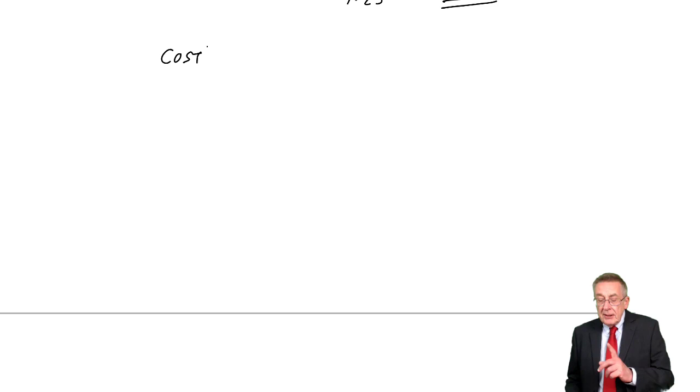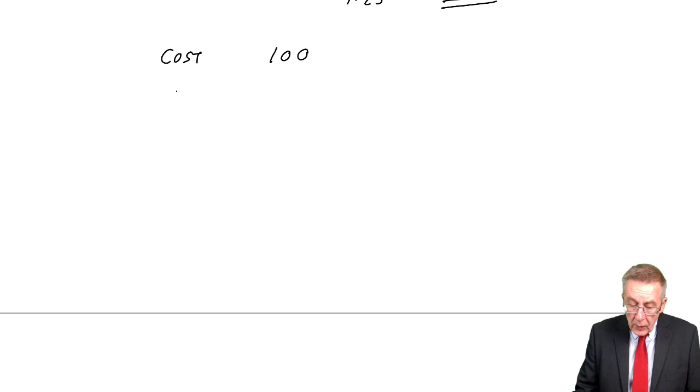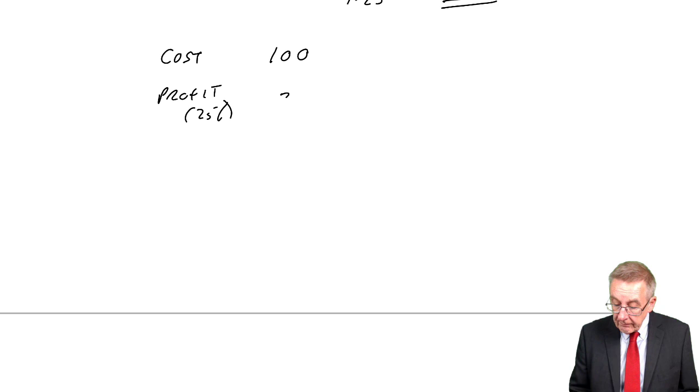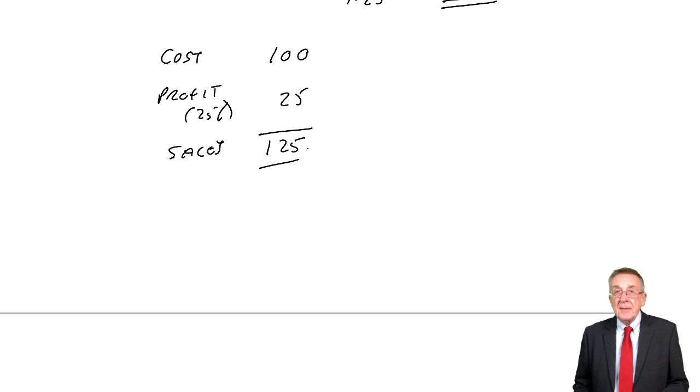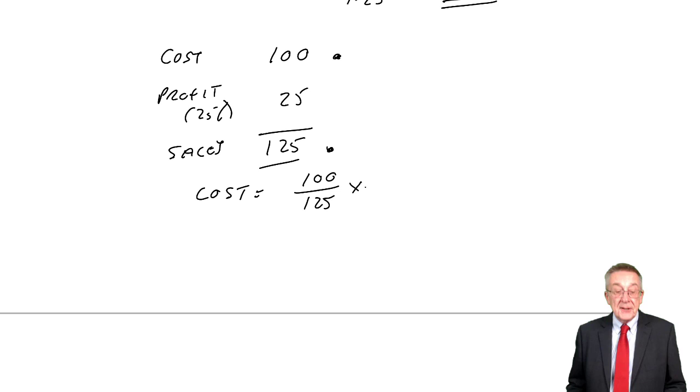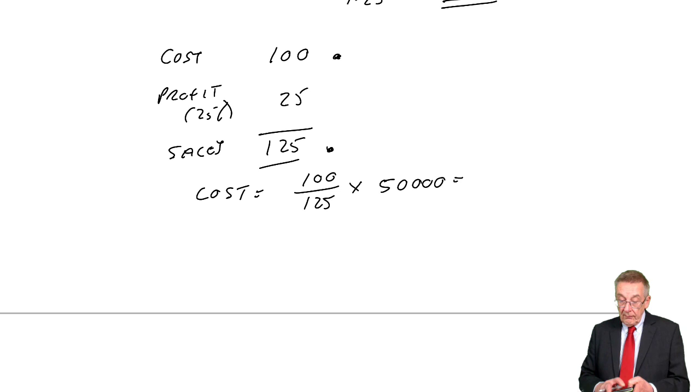...the actual figures for the moment. You could say for every 100 cost, we're going to add on a profit, a markup of 25%. And the sales will therefore be 125. So for every 100 cost, sales will be 125. Or putting it the other way round, for every 125 sales, the cost will be 100. So the cost will always be 100 out of 125 of the sales. And if the sales are 50,000, well, 100 divided by 125, 40,000.